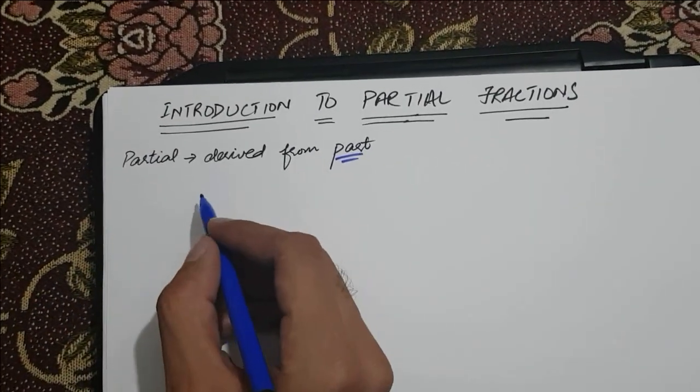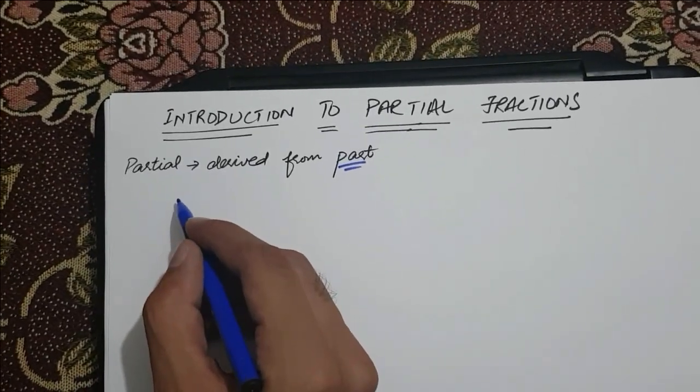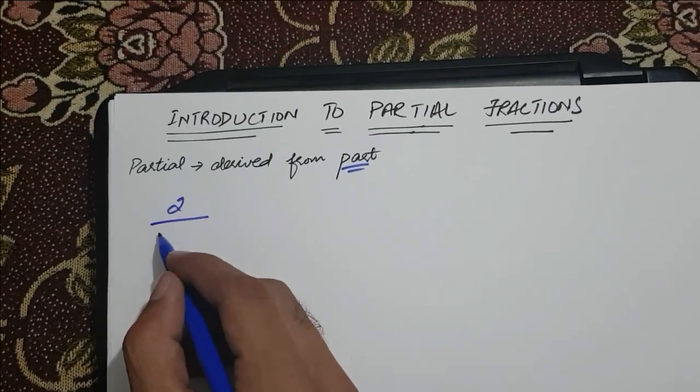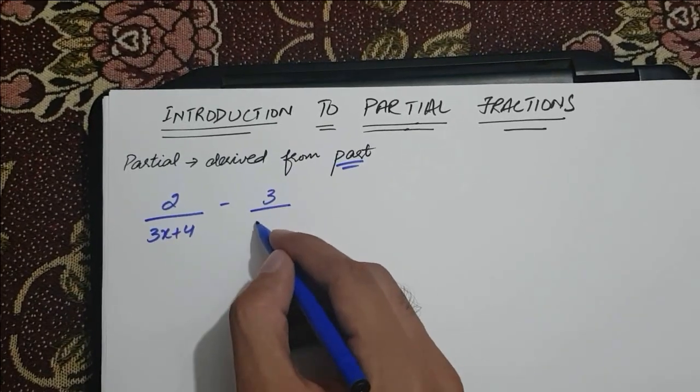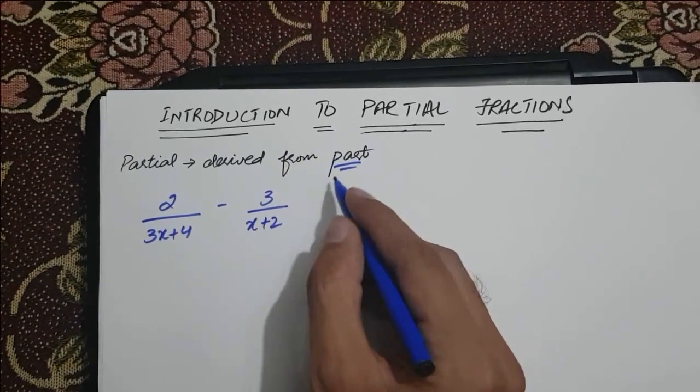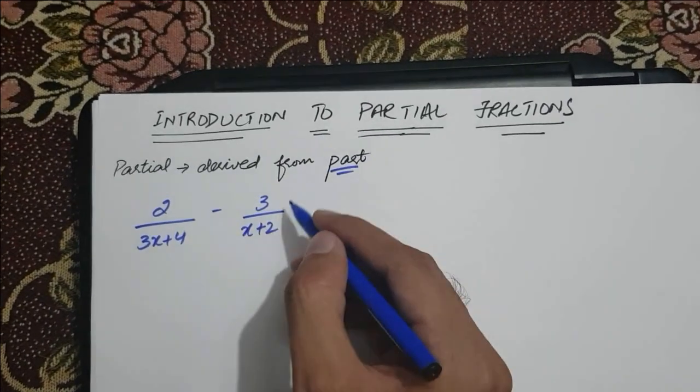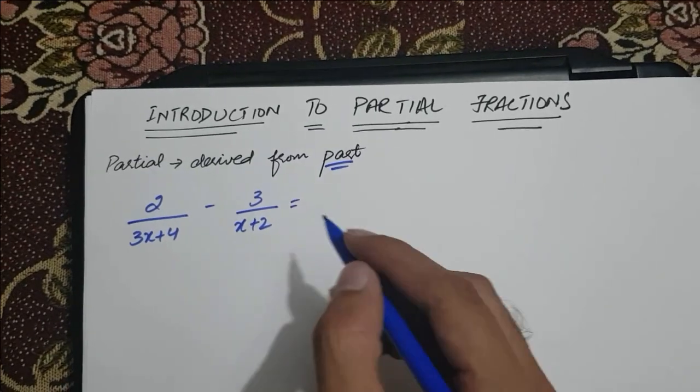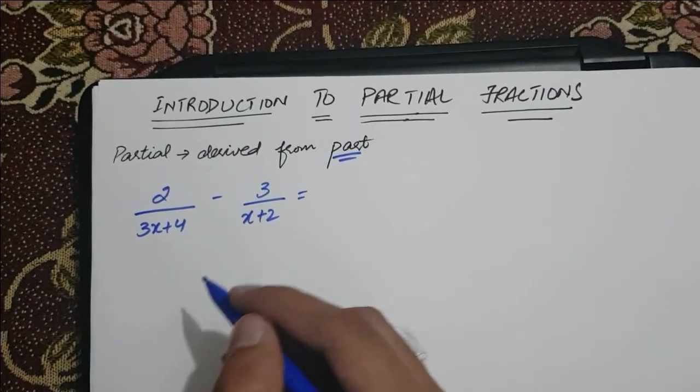In our previous classes, we studied how we can add or subtract two fractions and find their resultant. Let's say we have a fraction 2 over 3x plus 4 minus 3 over x plus 2, and we are here to find its resultant fraction.